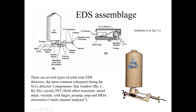Here you can see the EDS assemblage. The main entrance point of the EDS detector is shown here. Inside, we have the silicon-lithium crystal — which is why it's called a silicon-lithium detector — along with a field-effect transistor (FET). The beryllium window is where X-rays enter the detector.